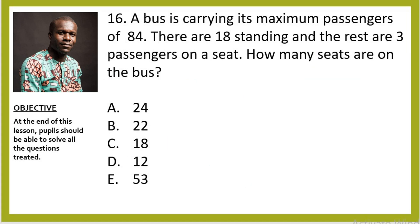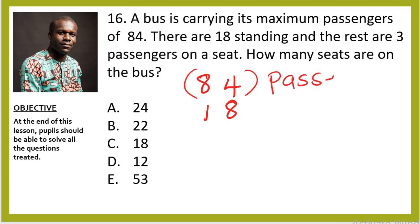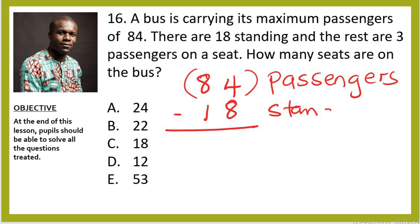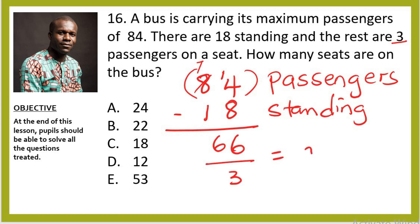Question 16: A bus is carrying its maximum of 84 passengers. 18 are standing and the rest are seated 3 per seat. How many seats are there? 84 minus 18 = 66 people seated. Since 3 passengers sit per seat, divide 66 by 3 = 22 seats. There are 22 seats on the bus.